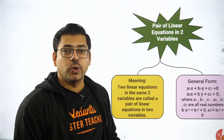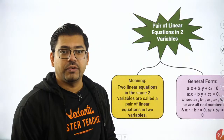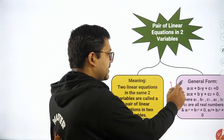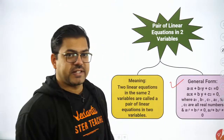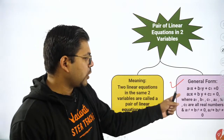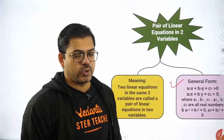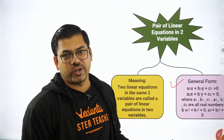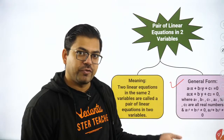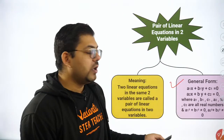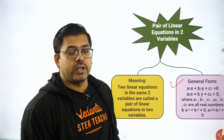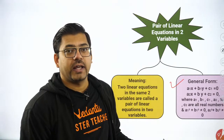In pair of linear equations in two variables, the format is: a1x + b1y + c1 = 0 and a2x + b2y + c2 = 0. These are the two equations we consider for solving. Now here, the most important thing is that there are three conditions.